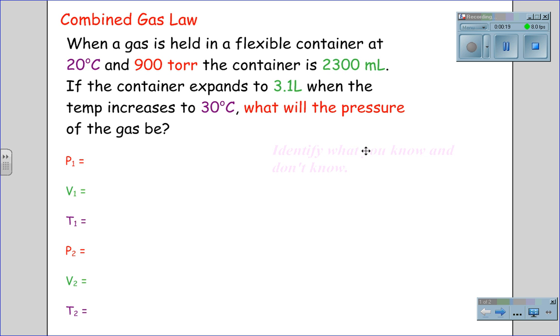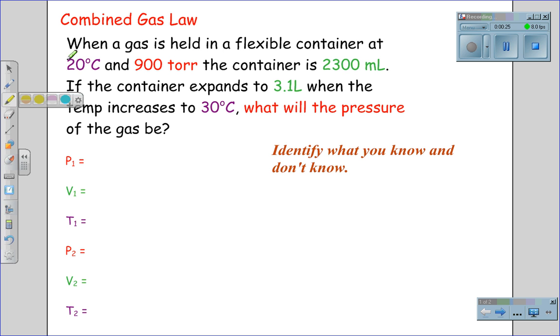The first thing we want to do is identify what you know and what you don't know. By highlighting what we know: the first temperature is 20 degrees Celsius, the first pressure is 900 torr, and the first volume is 2,300 milliliters. The container will expand to a new volume of 3.1 liters at a new temperature of 30 degrees Celsius, and we are looking for the new pressure.